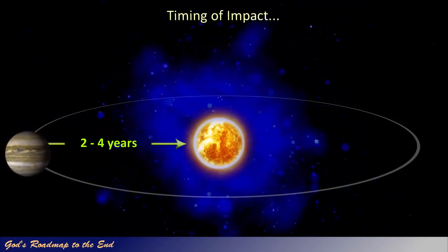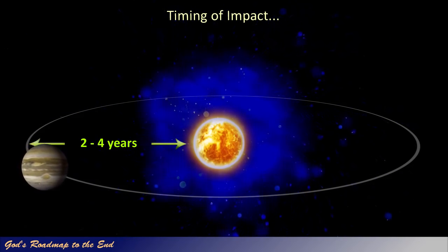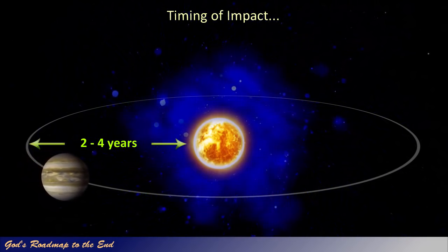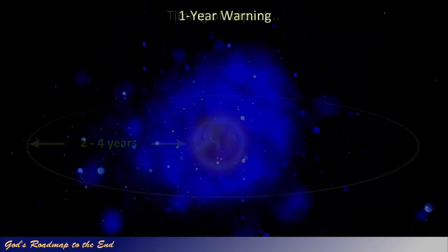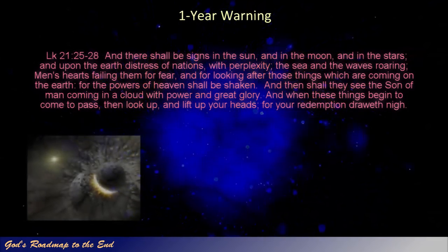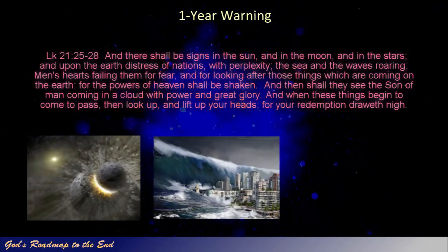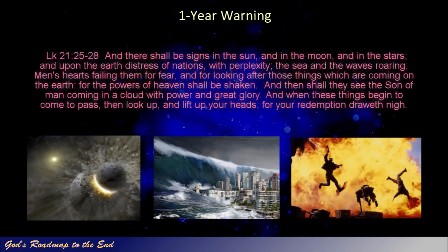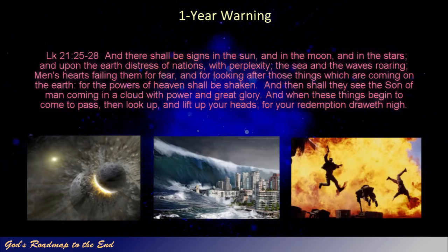It will also serve as evidence to those who mock him and who reject his word, that he is the living God who loves every person on earth that he created, and who desires to save those who accept his gift of salvation from the coming destruction. Jesus described the approaching end times in Luke 21 verse 25 to 28: 'And there shall be signs in the sun, and in the moon, and in the stars, and upon the earth distress of nations with perplexity, the sea and the waves roaring, men's hearts failing them for fear, and for looking after those things which are coming on the earth, for the powers of heaven shall be shaken. And then shall they see the Son of Man coming in a cloud with power and great glory. And when these things begin to come to pass, then look up, and lift up your heads, for your redemption draweth nigh.'